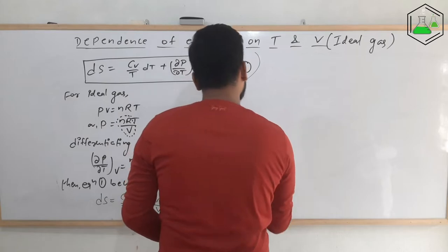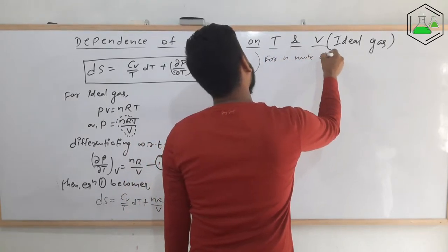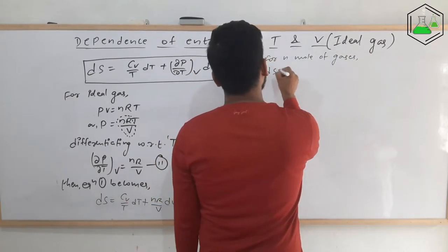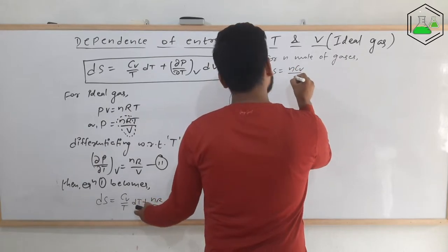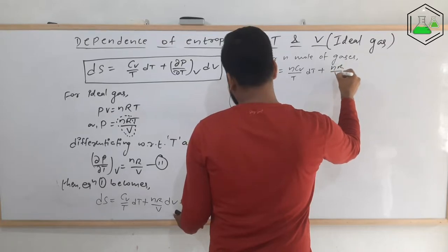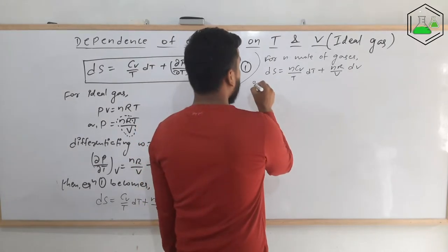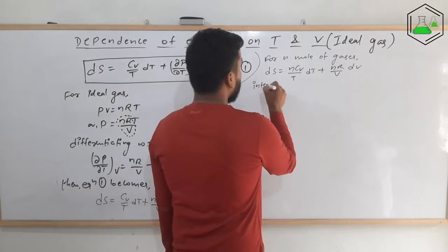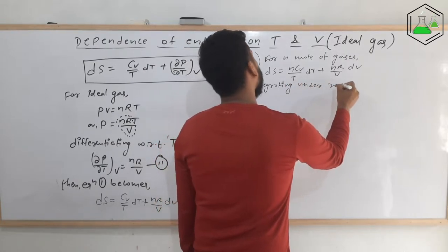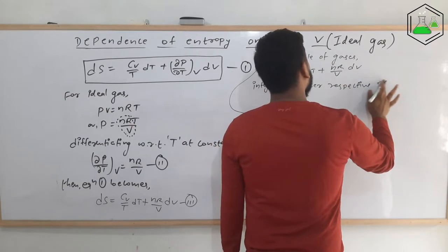Here, if Cv is for one mole, then for n moles of gas we write nCv. So it will be ds equals (nCv/T)dT plus (nR/V)dV. Now we need to integrate this equation under respective limits.